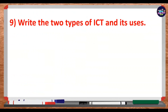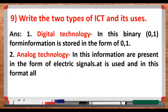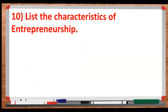Write the two types of ICT and their use. ICT ke two types hote hain: digital technology and analog technology. Digital technology mein binary 0 or 1 ka formation hota hai. Aur analog technology form the electric signal — ismein signals aate hain aur saare formats aate hain.